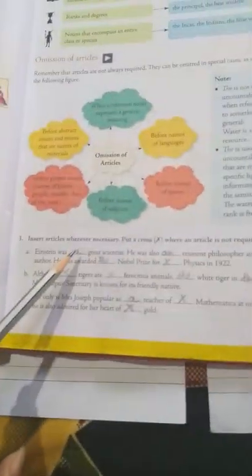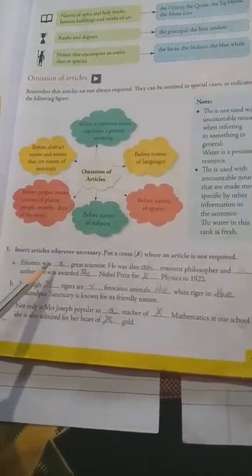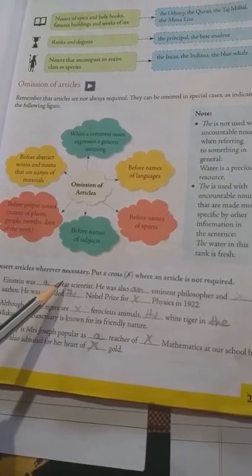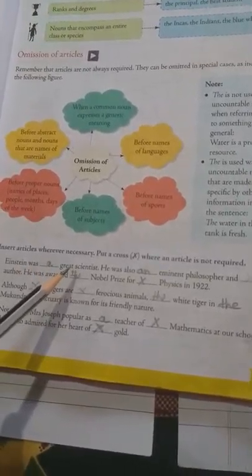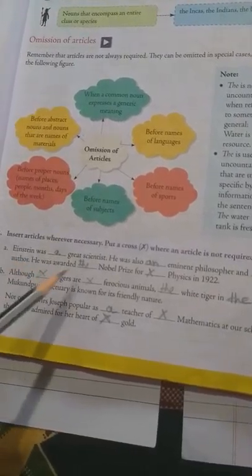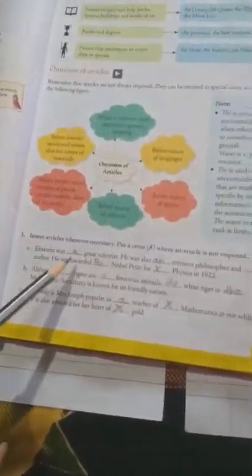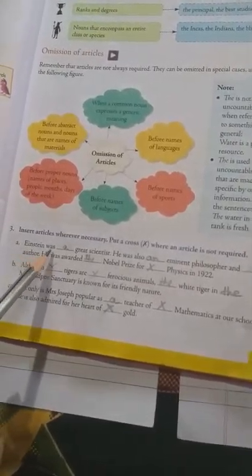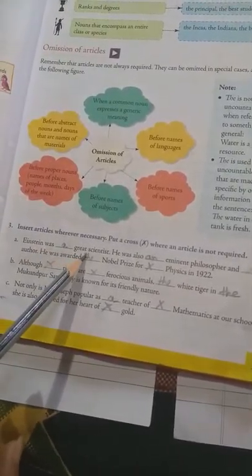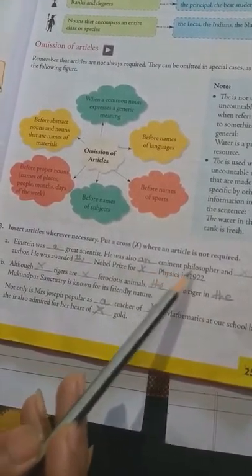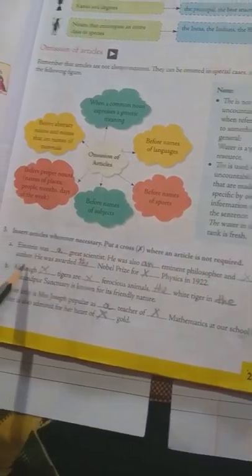So, now you see the articles. So, articles. So, which are the articles? A, An, and The are the three articles. The is your definite article. A and An are indefinite articles. So, now we fill up the blanks with the articles. And where it is not necessary, you put the cross mark. Number A. Einstein was a great scientist. He was also an eminent philosopher and cross author. He was awarded the Nobel Prize for cross physics in 1922.